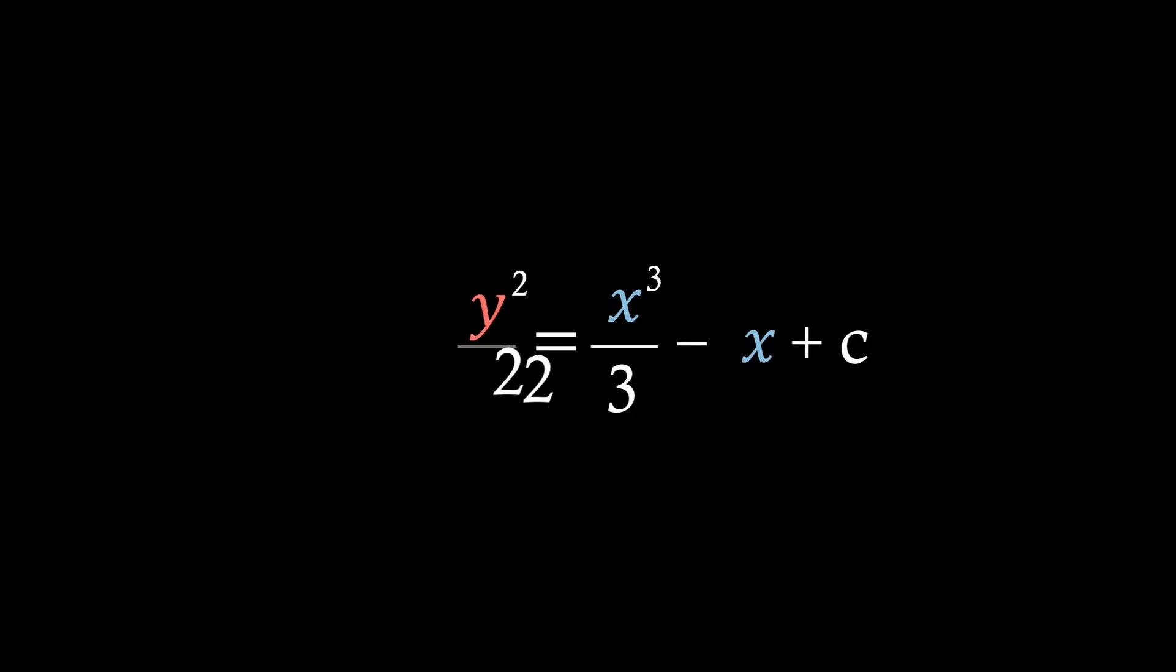So let's multiply both sides by 2 and then if we take a square root we'll quite easily see that we've now got y in terms of x. Thus our solution is just the square root of 2x cubed over 3 minus 2x plus c.